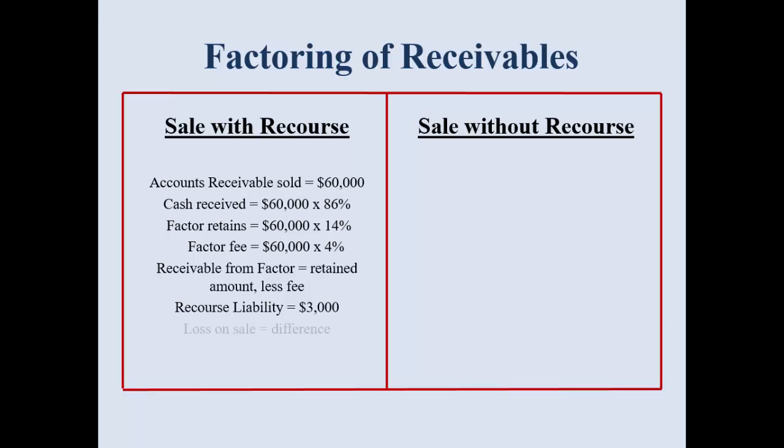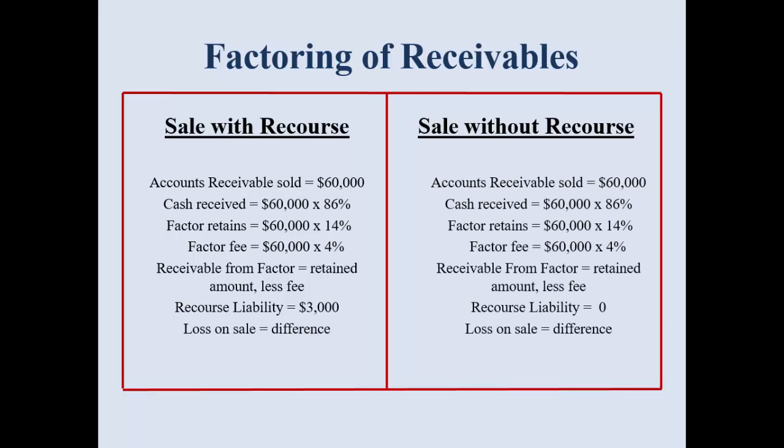Let's look at some numbers. I'm going to sell $60,000 in receivables. The day I sell them, I get 86% of that immediately. The factor is going to hang on to 14%, and of that 14%, I'm really only going to get 10% back. So selling $60,000, the total I could possibly get is 96%, because they're going to charge me that 4% fee. We also have to look at the liability. Selling for less than face value or net realizable value means I'm going to have a loss when I factor my receivables.